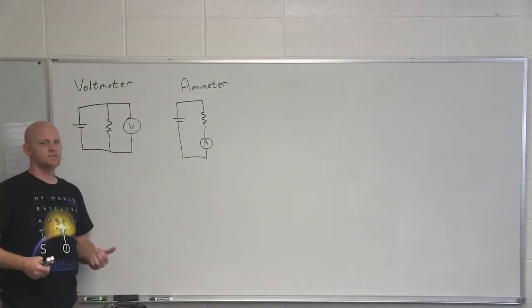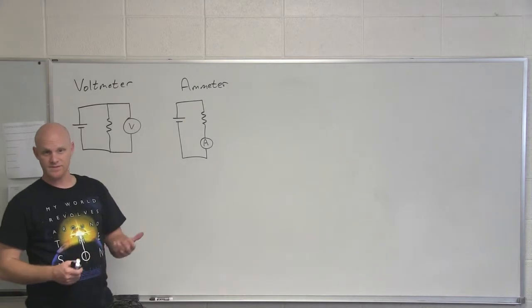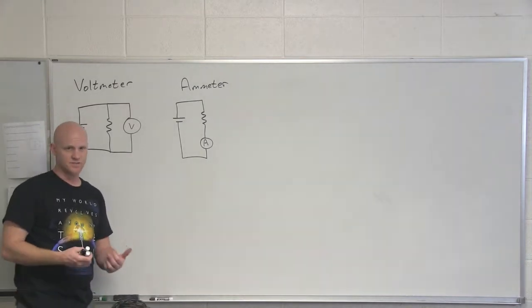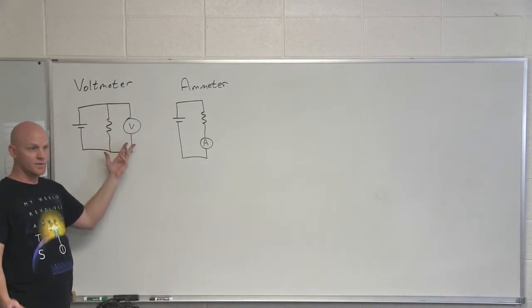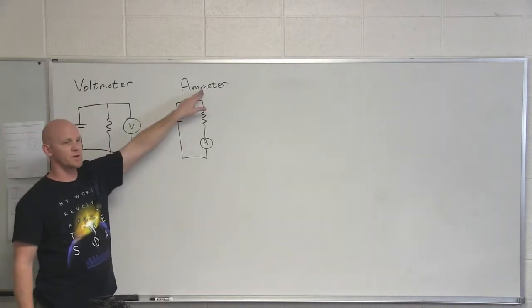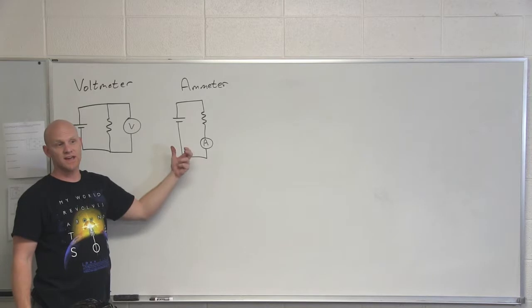Okay, let's talk about how we measure the potential difference across a resistor or how we measure the current flowing through a resistor. We can measure the potential difference across a resistor with a voltmeter—it measures volts. We can measure the current flowing through a resistor with an ammeter—it measures amps.